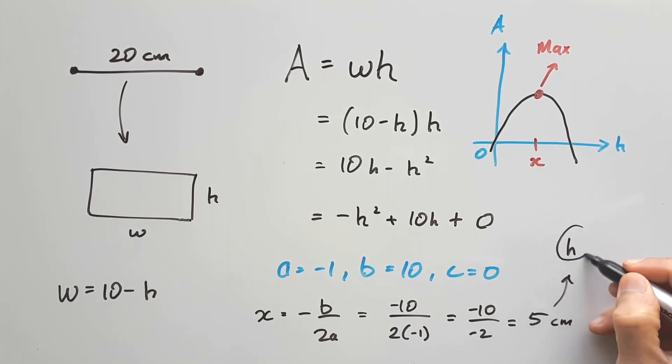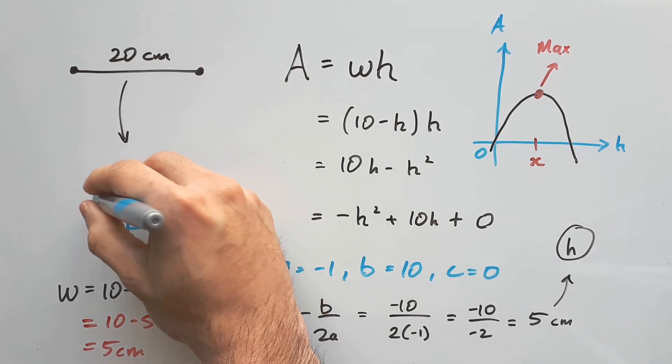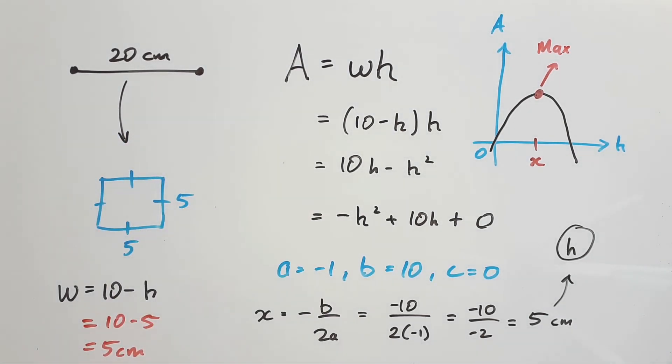This would be the height that achieves the maximum area. Coming back to our support relationship, we calculate W to be 5cm as well. That means our rectangle must be a square, and multiplying them together gives us our maximum area of 25 square centimeters.